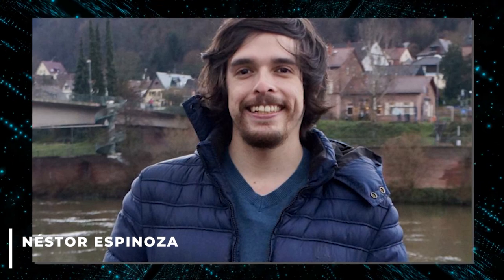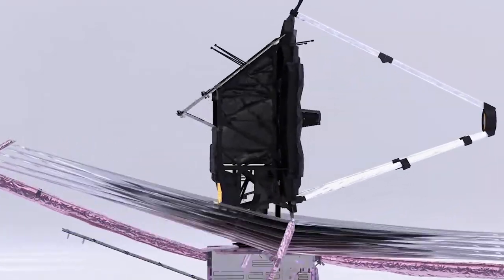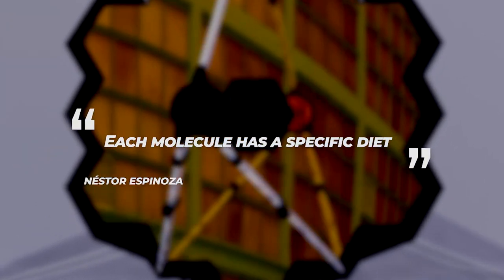What's cool here is that certain molecules like water in the atmosphere absorb specific types of color or light. Nestor Espinoza, an exoplanet researcher at the Space Telescope Science Institute which runs Webb, puts it in good terms, saying each molecule has a specific diet.